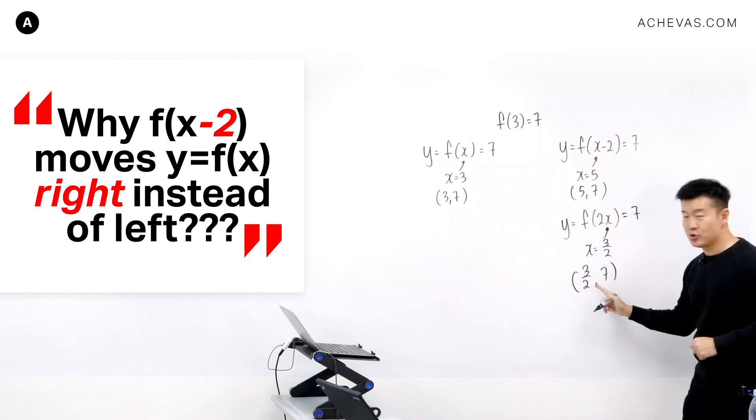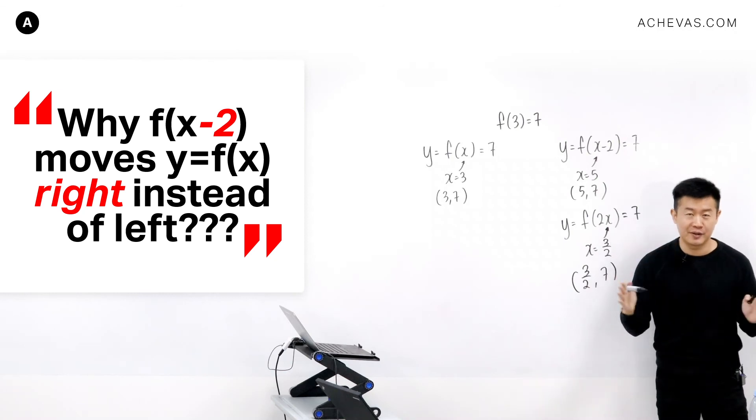So from 3 goes to 3 over 2, it is a compression of 2 times parallel to the x-axis.